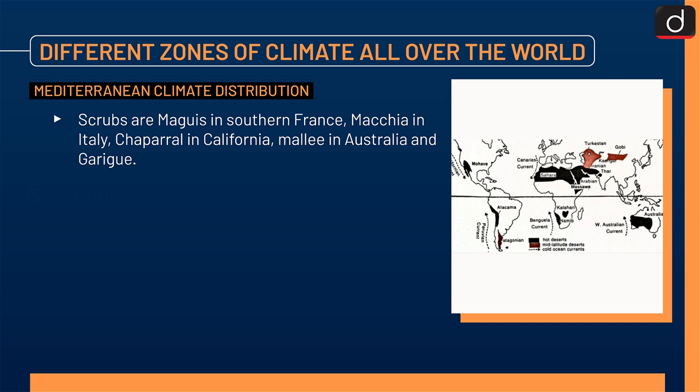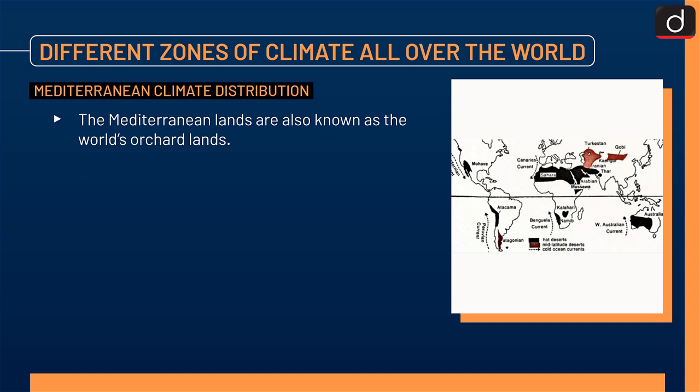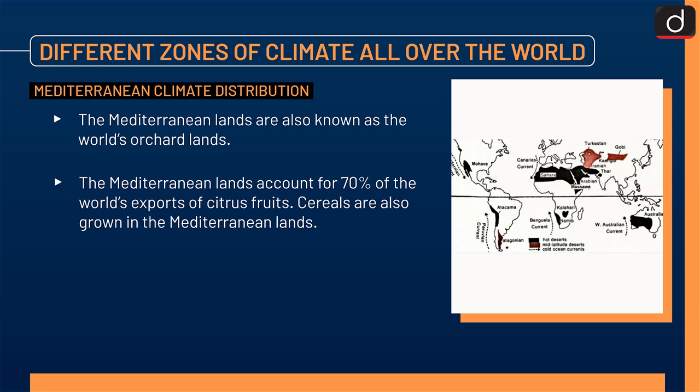Economy: earlier, the Mediterranean shorelands were once the cradle of world civilization. Nowadays, the area is important for fruit cultivation, cereal growing, wine making, and agricultural industries as well as engineering and mining. The Mediterranean lands are also known as the world's orchard lands, accounting for 70% of the world's exports of citrus fruits. Cereals are also grown in the Mediterranean lands.